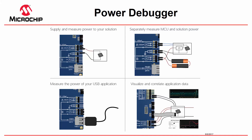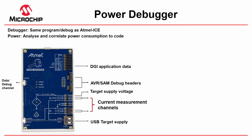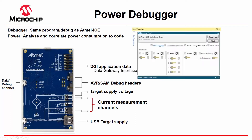To emphasize, the Power Debugger has the same program and debug capability as the Atmel ICE, but also gives the ability to analyze and correlate power consumption to code. The way it does that is it gets DGI application data from the application.